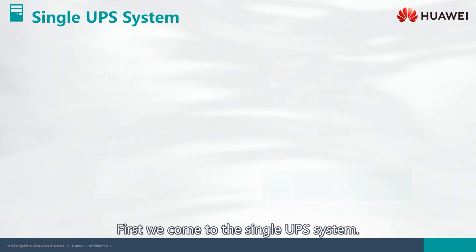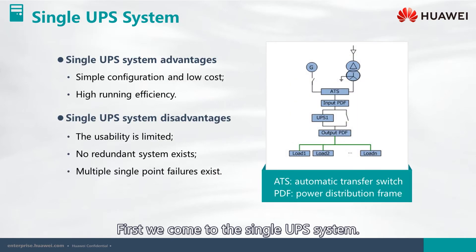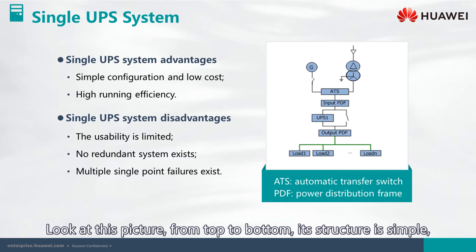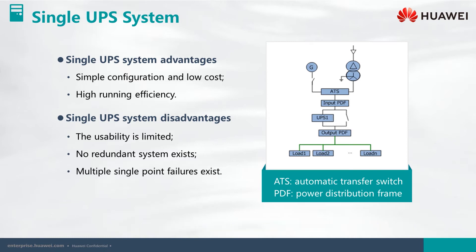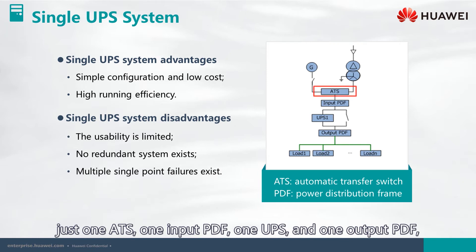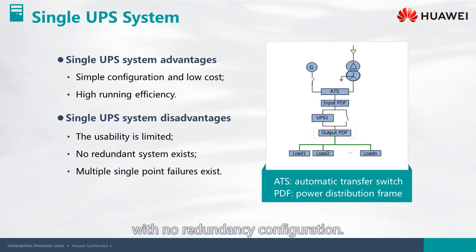First, we come to the single UPS system. Look at this picture from top to bottom. Its structure is simple: just one ATS, one input PDF, one UPS, and one output PDF, with no redundancy configuration.